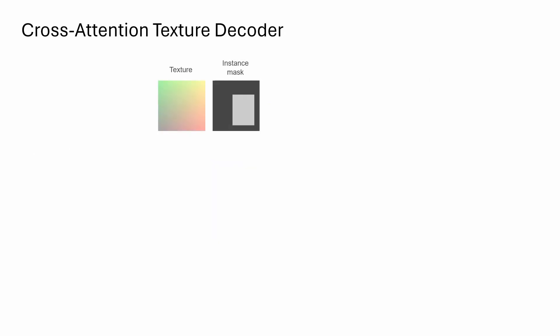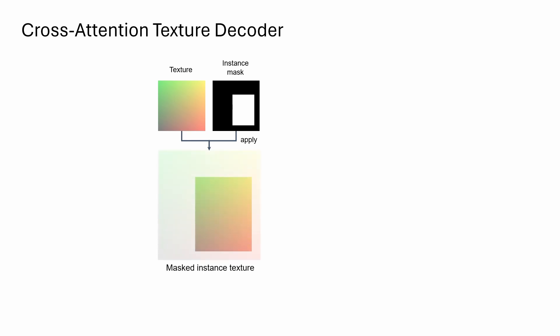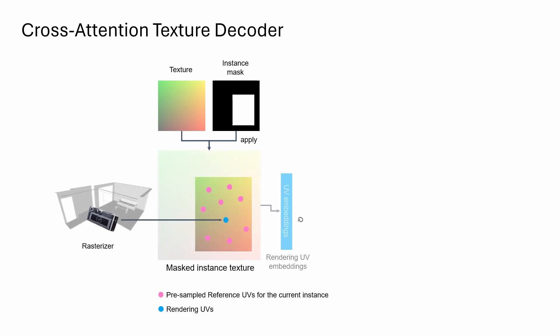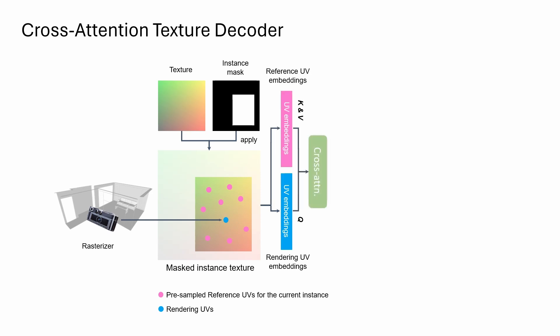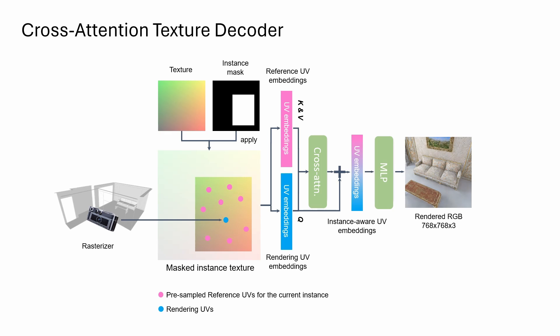For the cross-attention texture decoder, we use the instance masks to obtain the relevant instance texture. Using the pre-sampled reference UVs, the cross-attention module produces the instance-aware UV embeddings. Finally, a multi-layer perceptron predicts the RGB values.